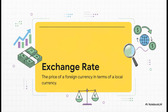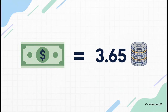Before we can even answer that question, we all have to be on the same page about the most basic idea here: the exchange rate. It sounds super technical, but it's not. All it is is a price tag — the price you pay in your money to buy one unit of someone else's money. To buy one single US dollar, you would need 3.65 Israeli shekels. That number, 3.65, is the exchange rate, and it's the key to everything else we're about to talk about.